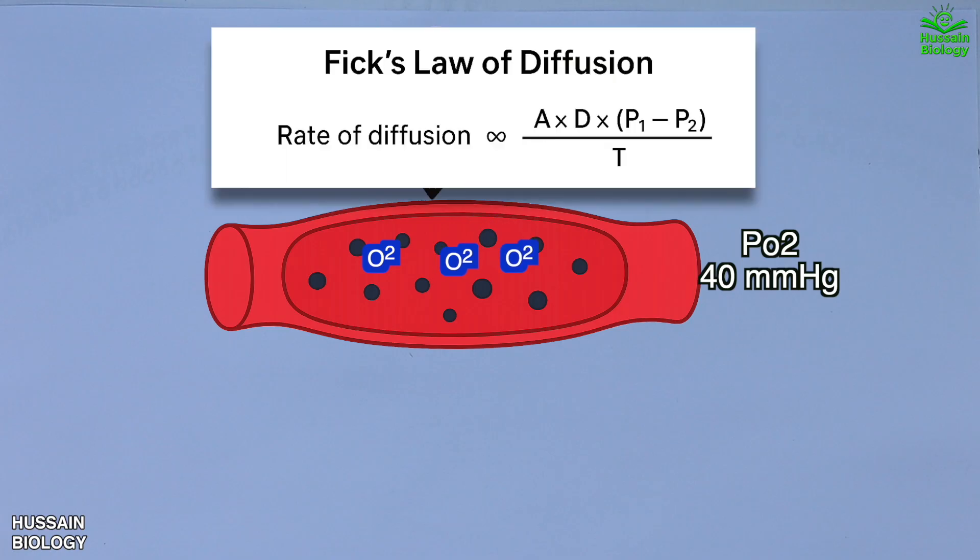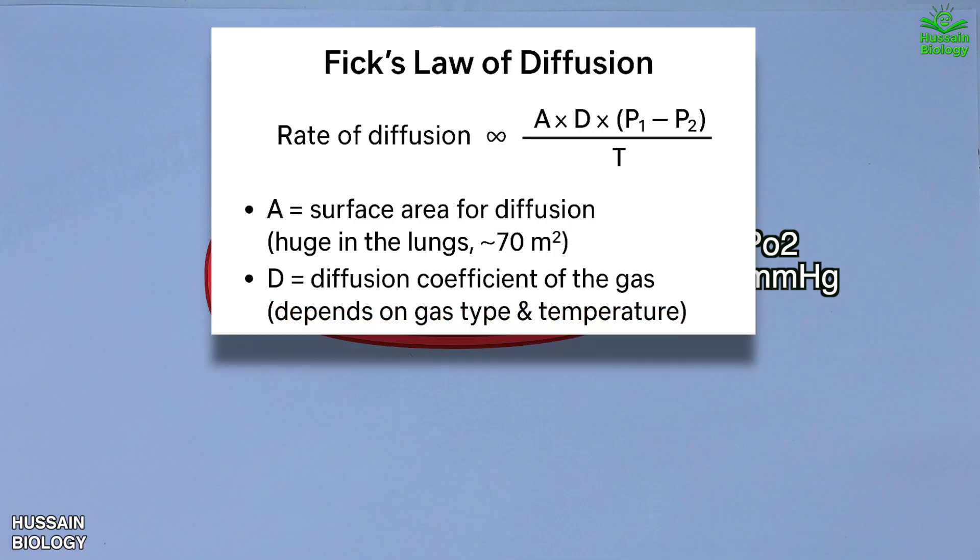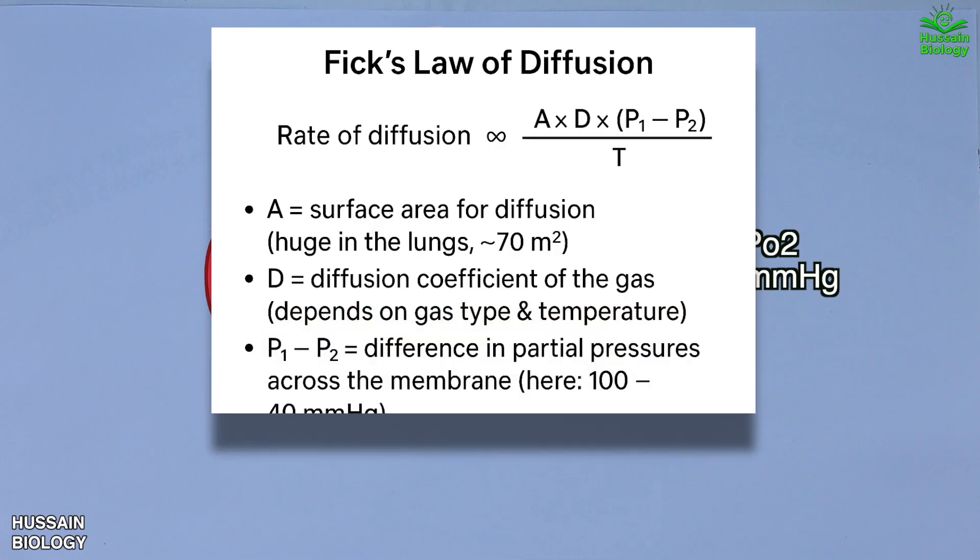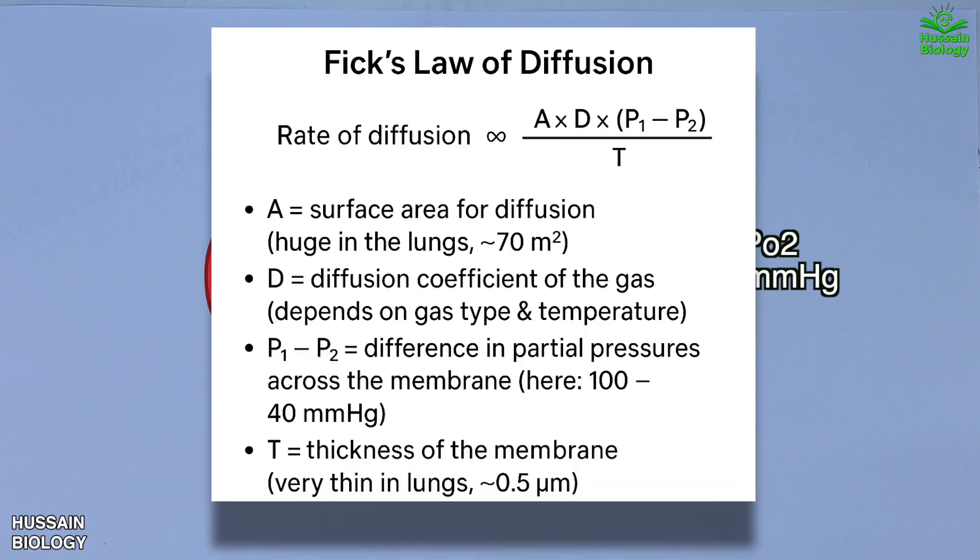Fick's law states that rate of diffusion is directly proportional to A × D × (P1 - P2) / T, where A is surface area for diffusion, D is diffusion coefficient of the gas, P1 - P2 is the difference in partial pressures across the membrane (here 100 mmHg - 40 mmHg), and T is the thickness of the membrane. Because the surface area is large, the gradient is big, and the membrane is thin, oxygen loads very quickly.